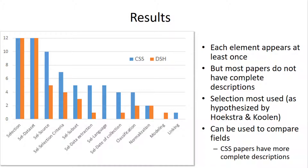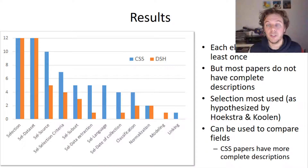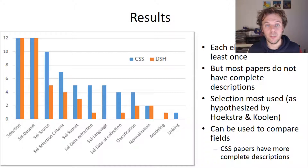This also shows that all elements are used in at least one paper, meaning there are no obsolete elements. But most papers currently do not have complete descriptions, so we claim a need for these more elaborate representations.